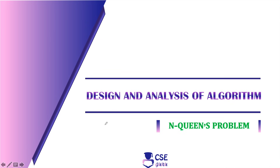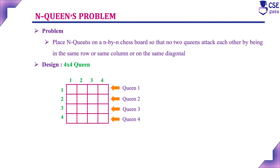Welcome to CSE Guru. In this session, we will discuss how to implement the N-Queens problem using the backtracking technique. The problem is: place N queens on an N by N chessboard so that no two queens attack each other by being in the same row, same column, or on the same diagonal.